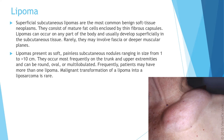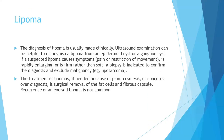Lipomas present as soft, painless subcutaneous nodules ranging in size from 1 to more than 10 centimeters. They occur most frequently on the trunk and upper extremities and can be round, oval, or multilobulated. Patients may have more than one lipoma, and malignant transformation into liposarcoma is very rare. Diagnosis is usually made clinically; ultrasound can help distinguish a lipoma from an epidermal cyst or ganglion cyst. If a suspected lipoma is symptomatic, rapidly enlarging, or firm rather than soft, biopsy is indicated to exclude malignancy such as liposarcoma. Treatment, when needed, is surgical removal of the fat cells and fibrous capsule, and recurrence after excision is uncommon.